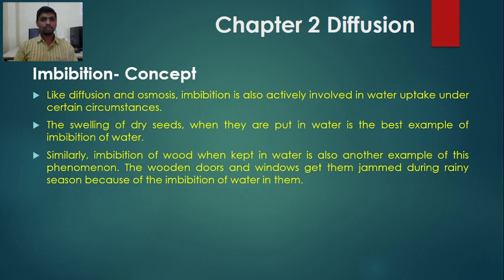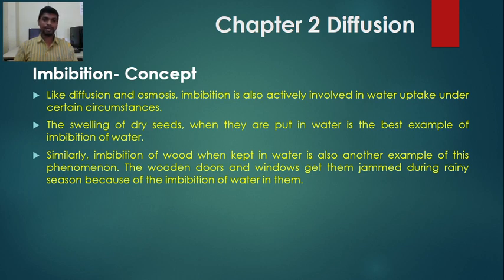Wooden doors and windows get jammed during the rainy season because of imbibition of water. During imbibition, there is absorption of water by the colloidal material. Dry seeds and wood elements are made up of colloidal material, and when this colloidal material is put in water, it absorbs water and swells.